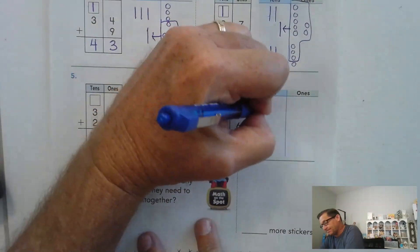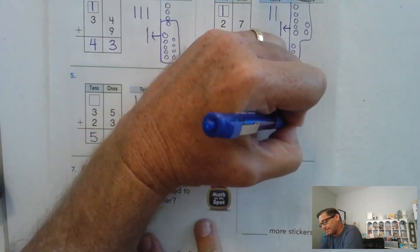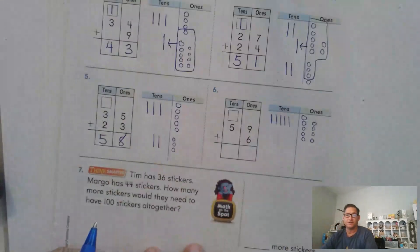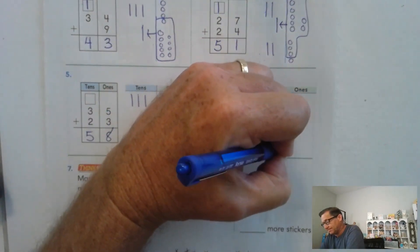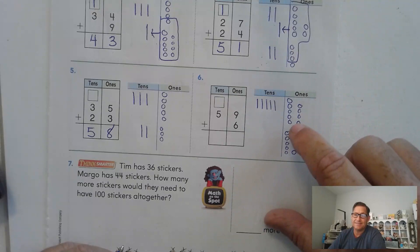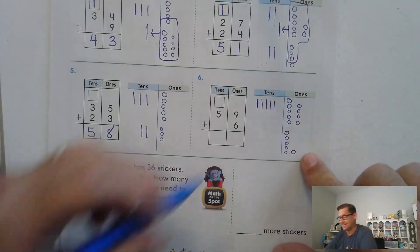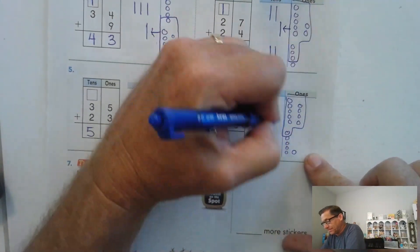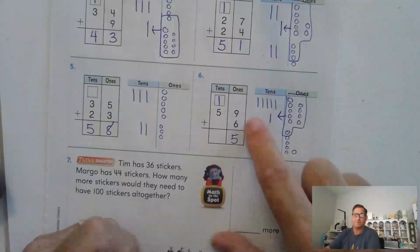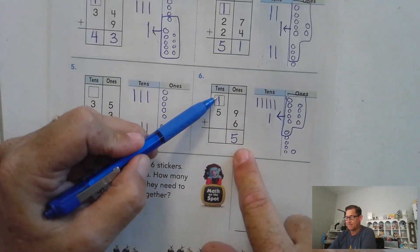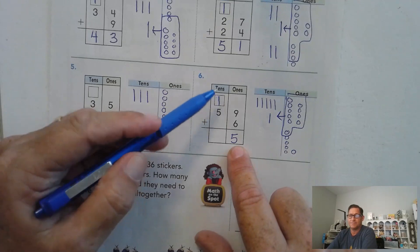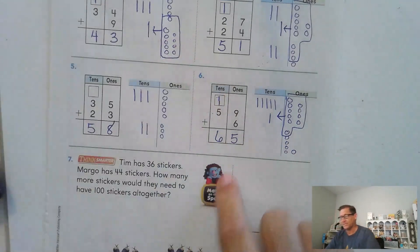Number six, 59 plus six. So there's our 59. Now we have six ones that we're going to add to that. So do we have any ones that need to be regrouped as a 10? We have nine, 10, 11, 12, 13, 14, 15. Sure we do. So we're going to trade 10 of those ones for a 10, leaving us five ones. Nine plus six is 15. 15 is made up of, if we said 15 ones, we can trade 10 of those ones for a 10, leaving you five ones. So we have five plus the regrouped 10, which gives us 65.